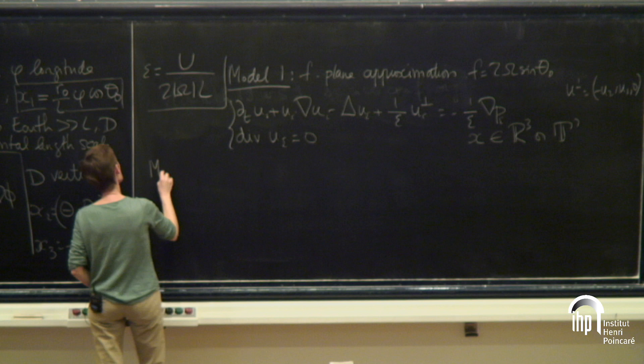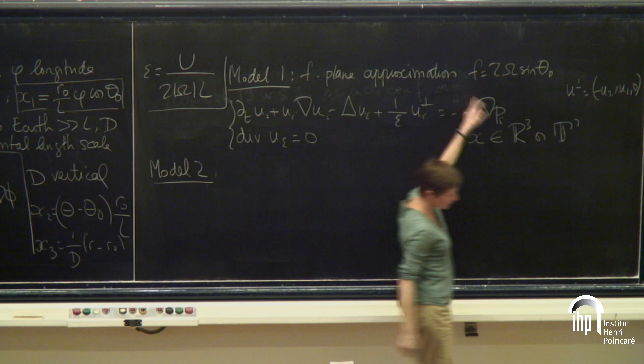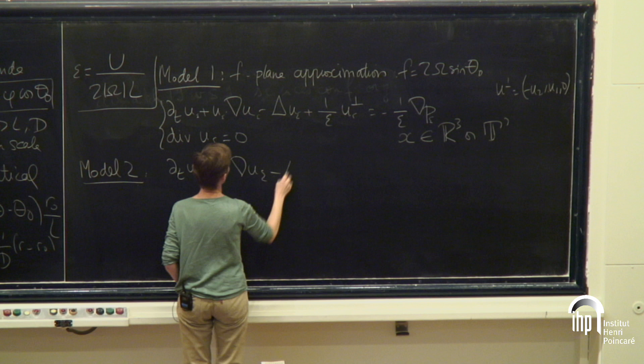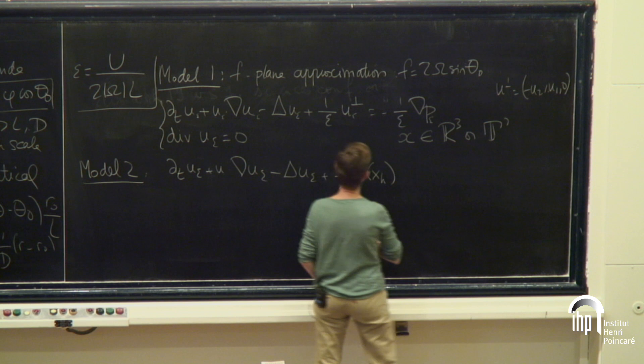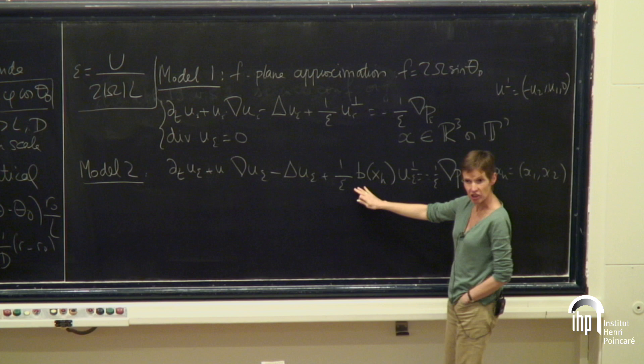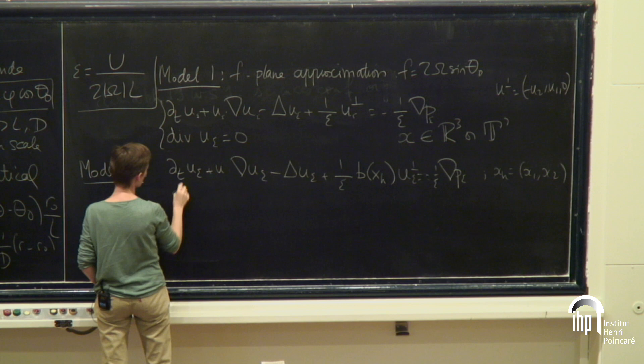Model two is essentially the same thing, but I assume that my latitude is in an extended zone, so I can't assume the Coriolis force is a constant anymore. The only difference is that my Coriolis force now depends on the horizontal variable xh — that is x1, x2 — and I have this function b here which is not vanishing and which tells me that the Coriolis force depends on the latitude.